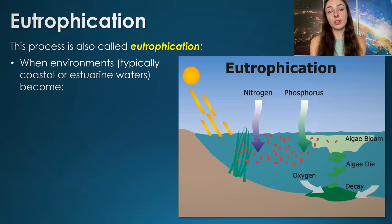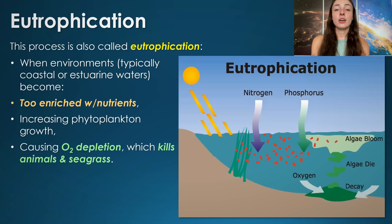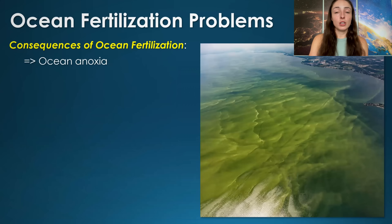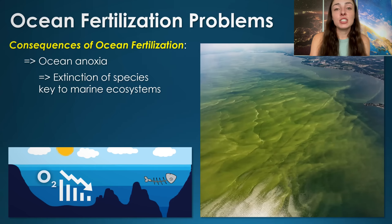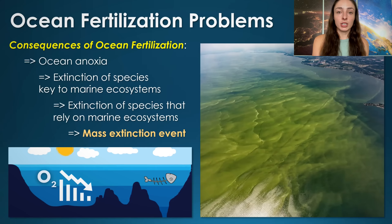This process is called eutrophication — over-enriching environments like coastal or estuary marine systems with nutrients, which increases phytoplankton growth and causes oxygen depletion that destroys ecosystems by killing or driving off all the animals. Consequences of ocean fertilization include ocean anoxia which, if widespread enough, could cause the extinction of many species key to marine ecosystems, subsequently leading to extinction of species that rely on such ecosystems — causing a mass extinction event.